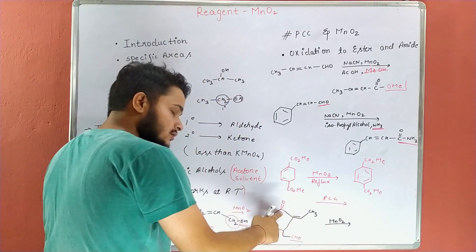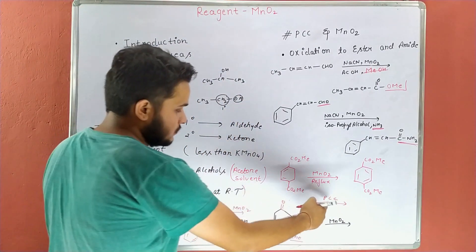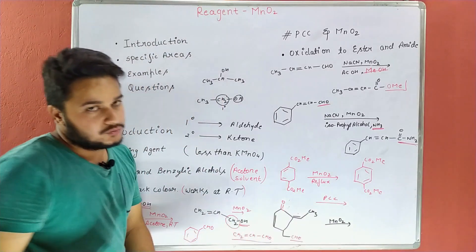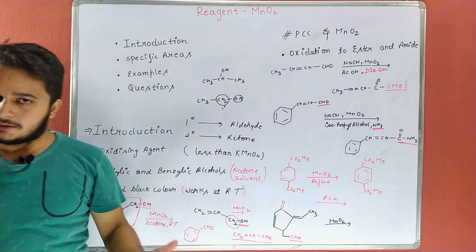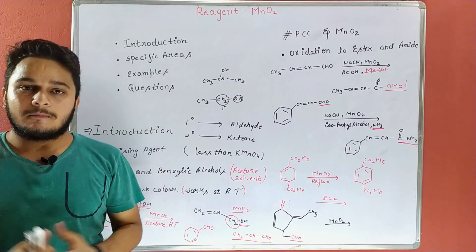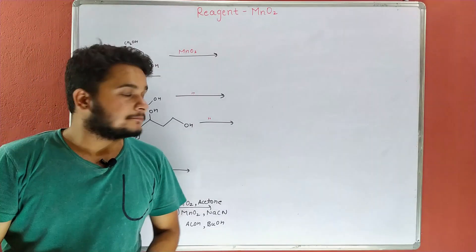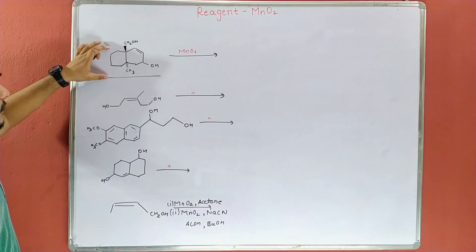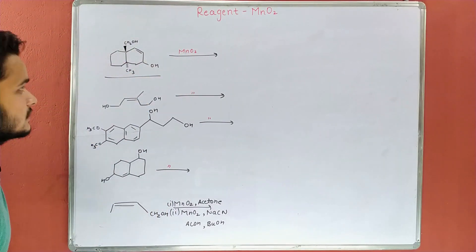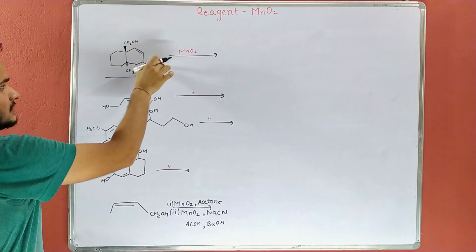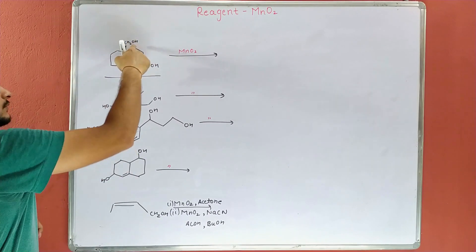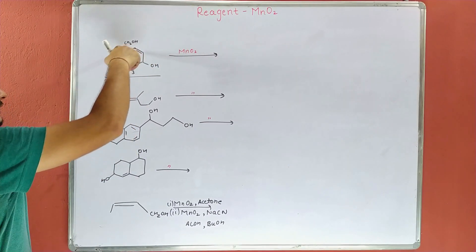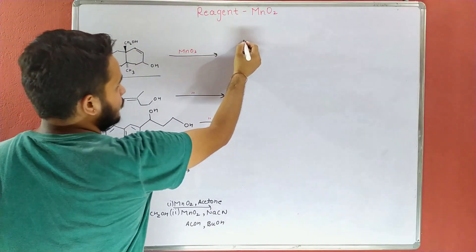MnO2 के case में सिर्फ allylic alcohol oxidize होगा। अब next segment की तरफ move करते हैं। First question: हमारा compound MnO2 के साथ react करता है। यह हमारा allylic alcohol है। अगर OH double bond से next carbon पर होता, तो allylic alcohol होता — but यहाँ वो allylic alcohol नहीं है — सिर्फ यह है।